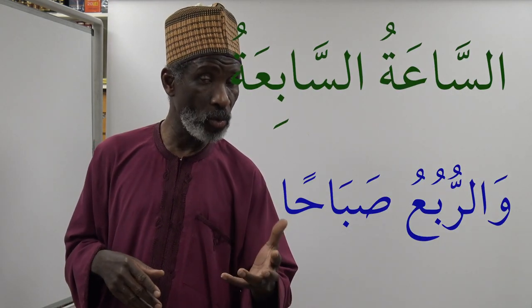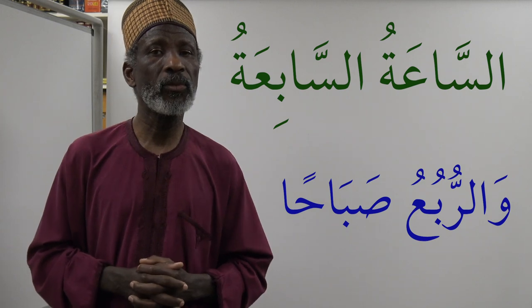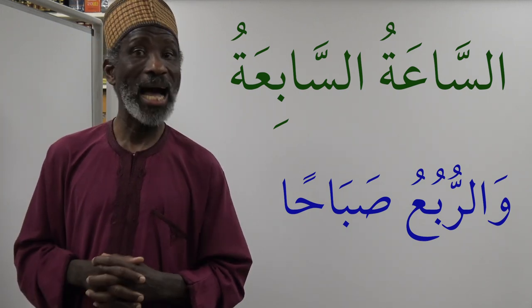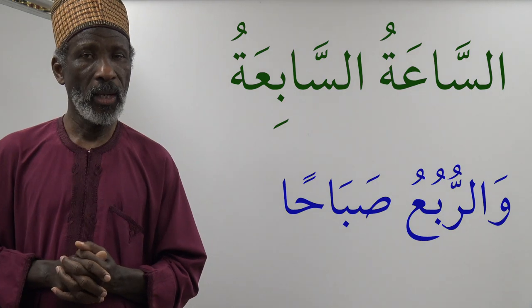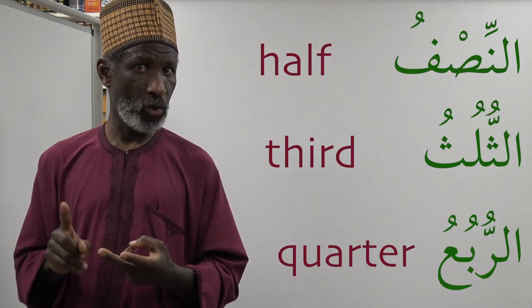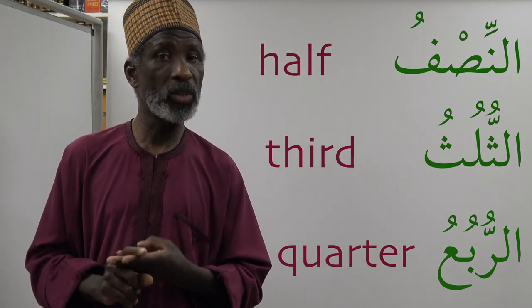So to summarize: we use 'nisf' for half, 'thuluth' for a third (twenty minutes), and 'rubwa' for a quarter (fifteen minutes). These all follow 'wa' to mean 'past.' For example, 'assa'atu al sabi'atu wa rubwa sobahan' means 'quarter past seven in the morning.'